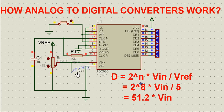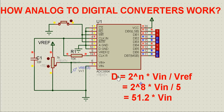Let's see for analog voltage of one volt — the equivalent digital output will be. Since DB7 is the MSB we start from the bottom, so one volt equals 0 0 1 1 0 0 1 1. Let's look at this formula: D is the decimal value of the output code.